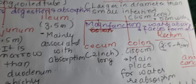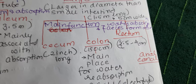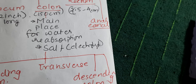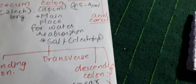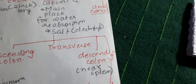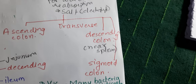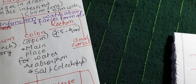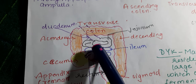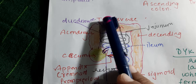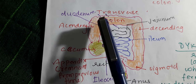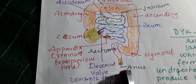Jejunum is narrower than duodenum and is highly coiled. Ileum is mainly associated with absorption. Looking at the large intestine, it has parts: cecum (2 inches long), colon (150 centimeters, the longest part of large intestine and the main place for reabsorption of water and salt). Colon is divided into ascending, transverse, descending, and sigmoid colon, and then rectum and anal canal.